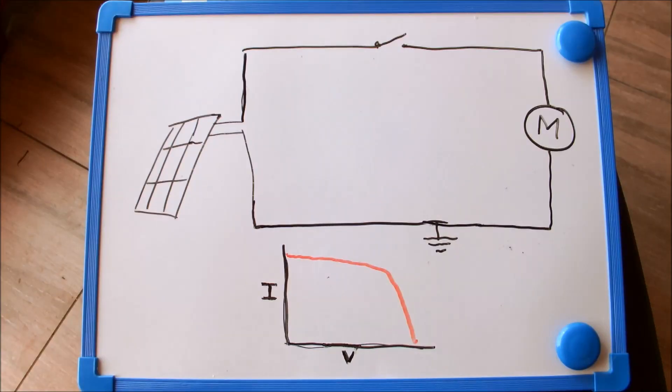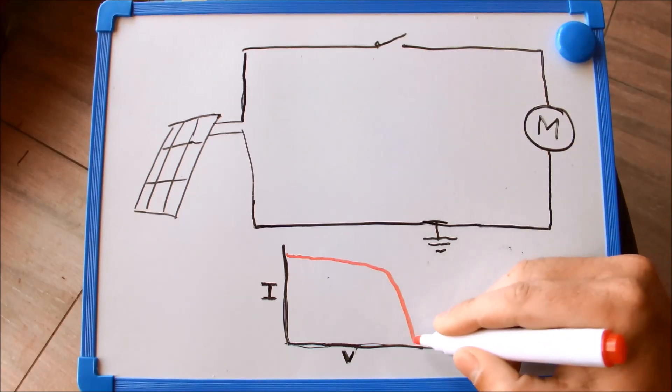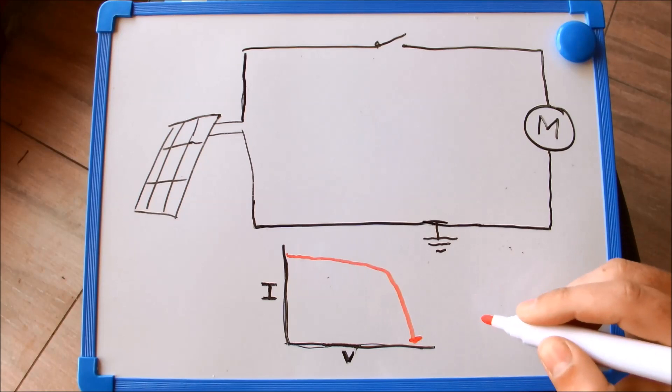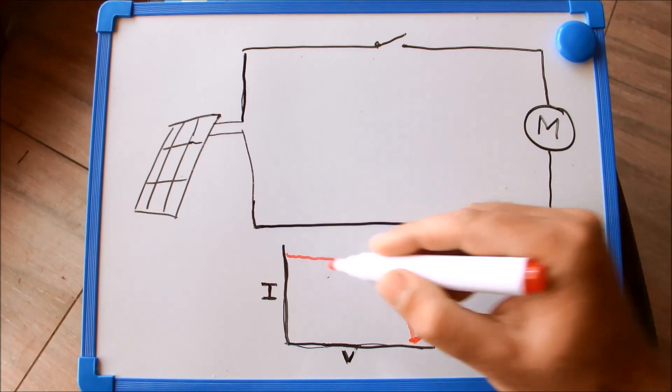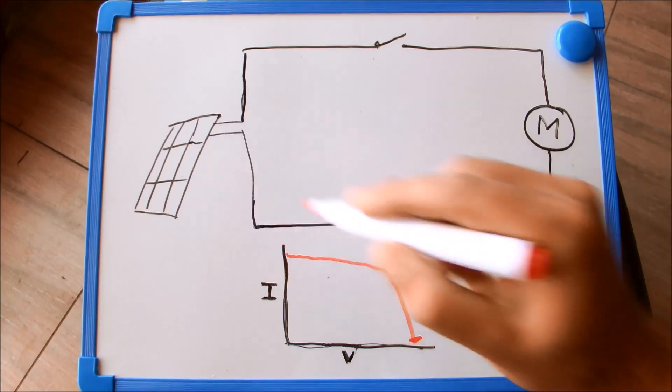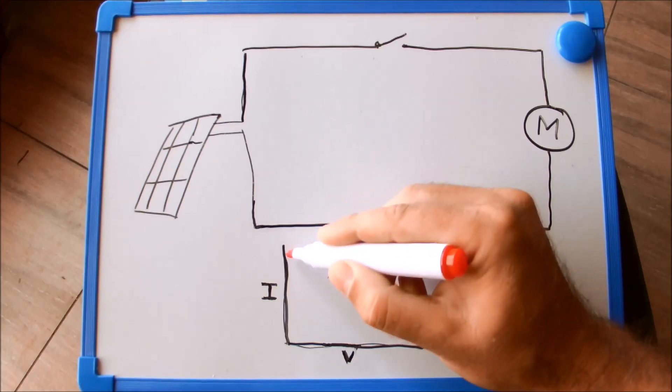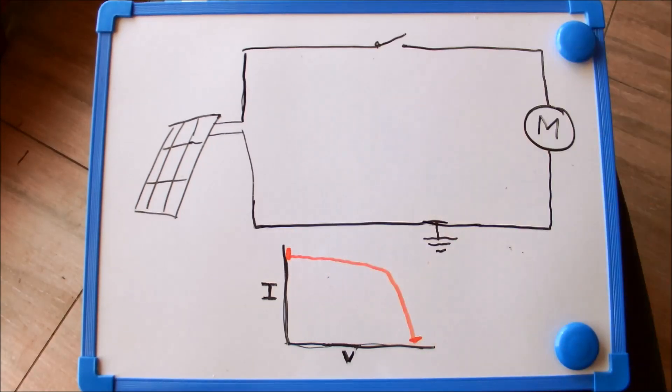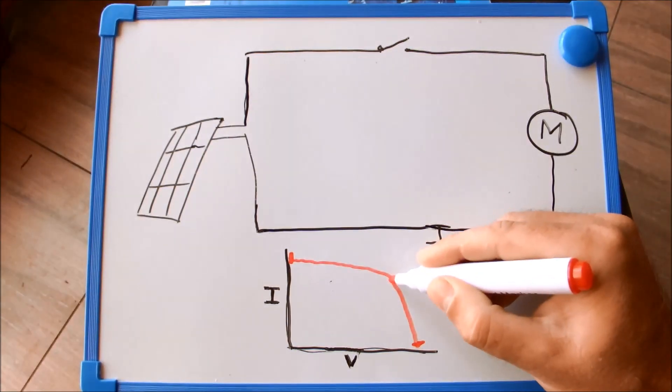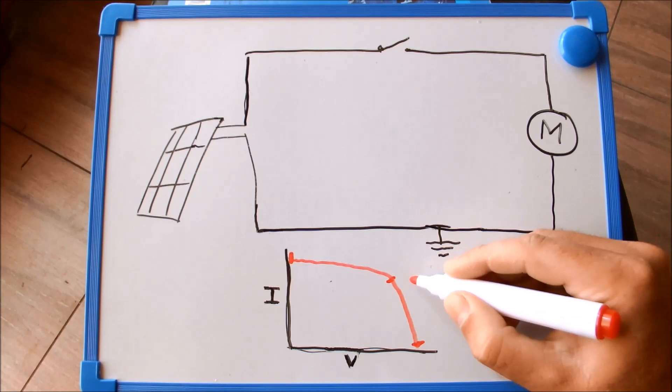I'll develop the schematic for the circuit step by step to also explain how it works. So starting off with the direct connection between panel and motor. Switch open and you've got open circuit voltage over here. And when you close the switch, assuming there's not enough current available from the panel, it drops to short circuit current and pretty much zero voltage. Maximum power on the panel would be somewhere over there.